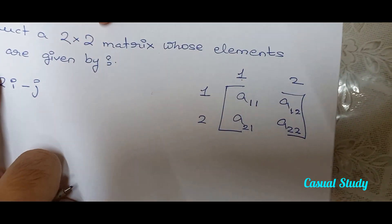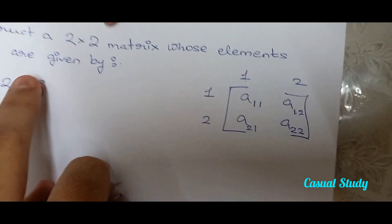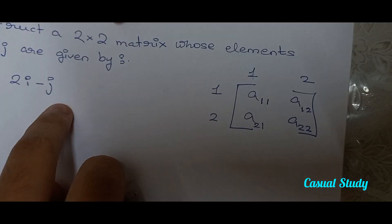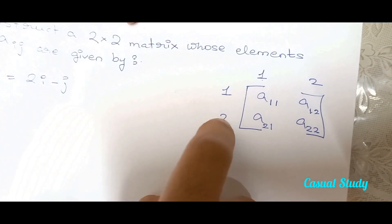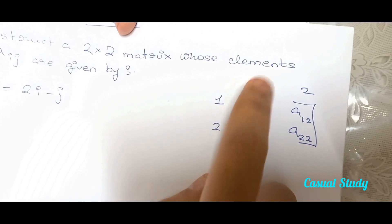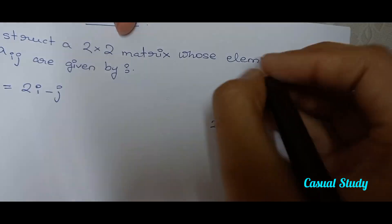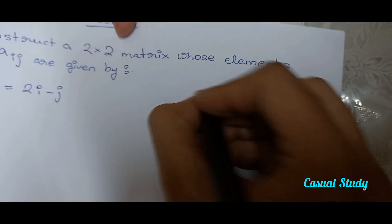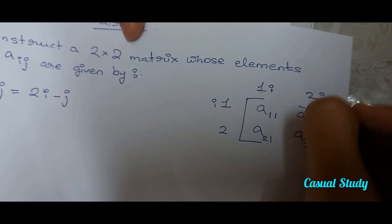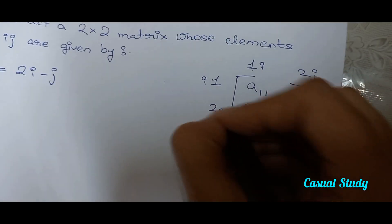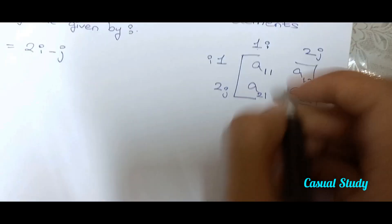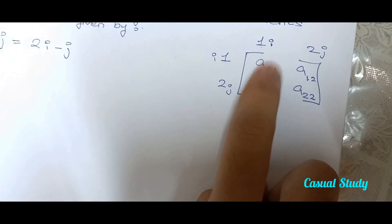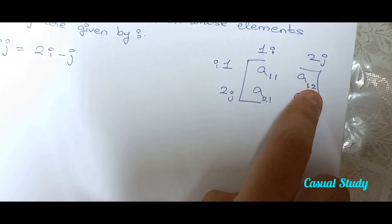Now, we have been given that this is i and j instead of 1 and 2. So I'm going to substitute 1 with i and 2 with j. So basically it's going to be i and j. I'm doing this with 1 and 2 because it's easy to calculate.